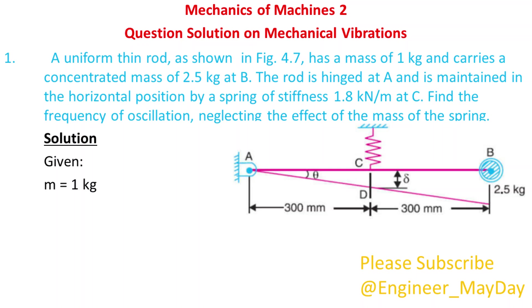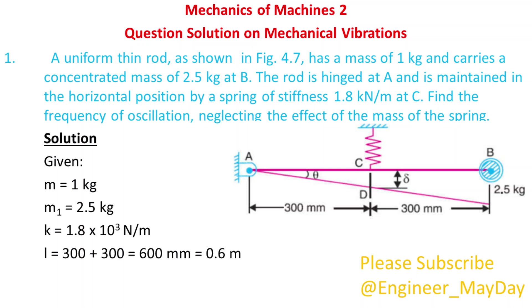Mass of rod M equals 1 kilogram. Concentrated mass M1 equals 2.5 kilograms. Spring stiffness K is equal to 1.8 times 10 to the power 3 newtons per meter. Length L equals 0.6 meters.